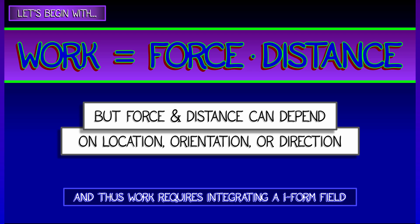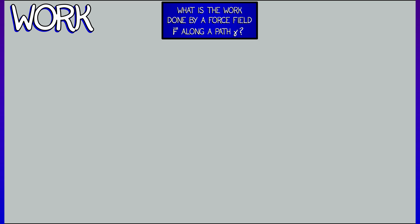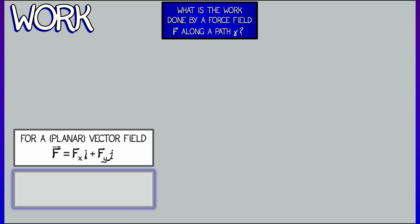Let's consider the case where we have force represented as a vector field. We have a force field f, and we're moving along a path gamma. In this case, if the vector field is of the form fxi plus fyj, then what we're going to do is build the one-form associated to this. We're going to build fxdx plus fydy.